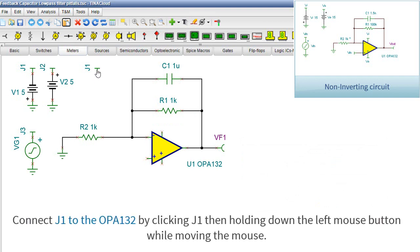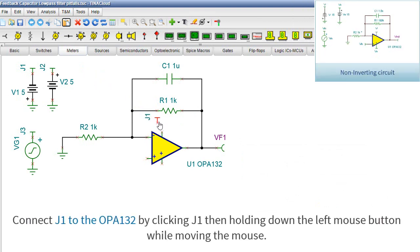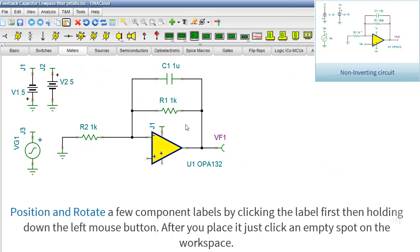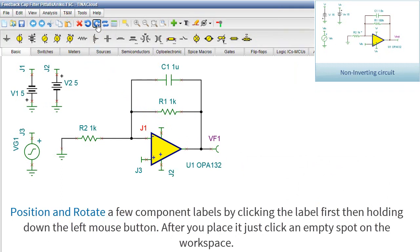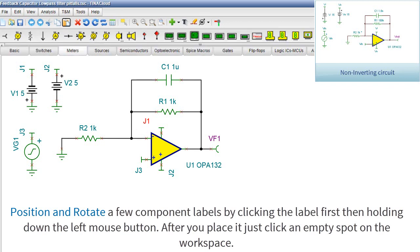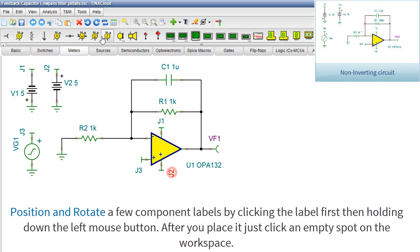Connect J1 to the OPA132 by clicking J1, then holding down the left mouse button while moving the mouse. Position and rotate a few component labels by clicking the label first, then holding down the left mouse button. After you place it, just click an empty spot on the workspace.